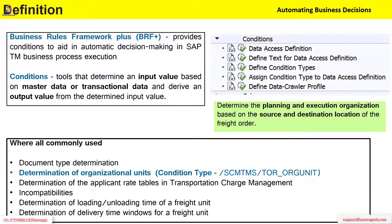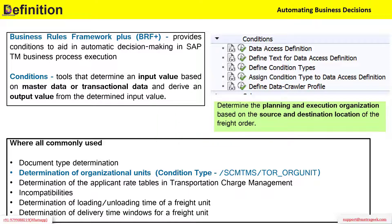Basically it's a simple input-output kind of tool. We will give some input value — that could be some master data or transaction data, some data point as an input value. And we will also say that if this is the input value, this is the output value. So that's the condition which we would provide, and we ask the system: if the input value is this, then please consider this as the output value as the functionality is processed.